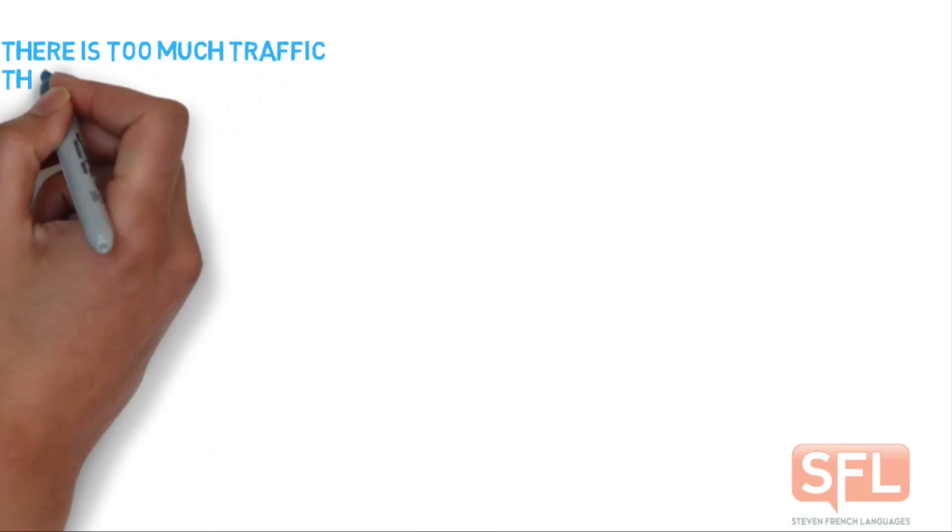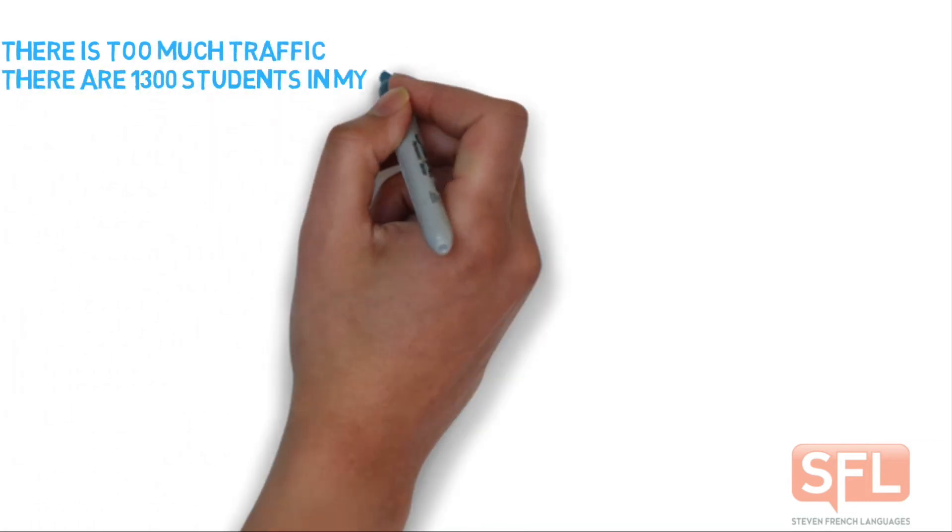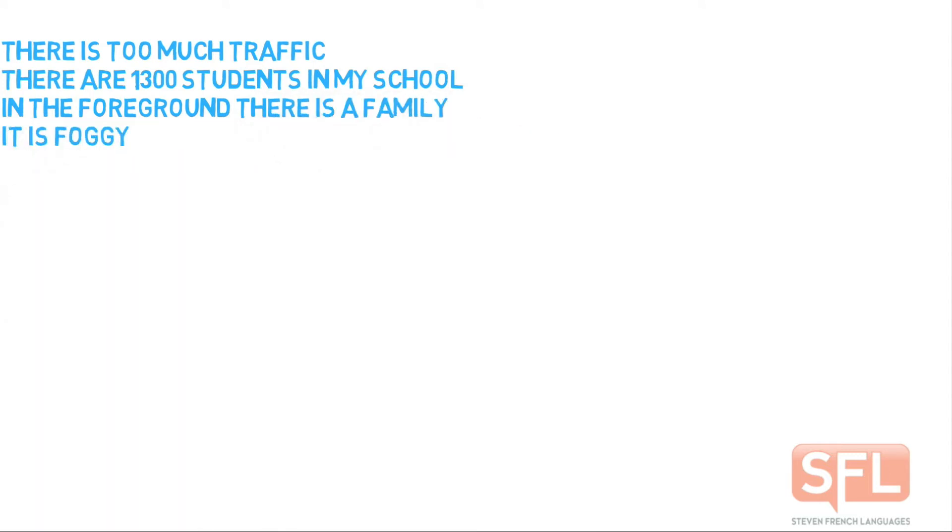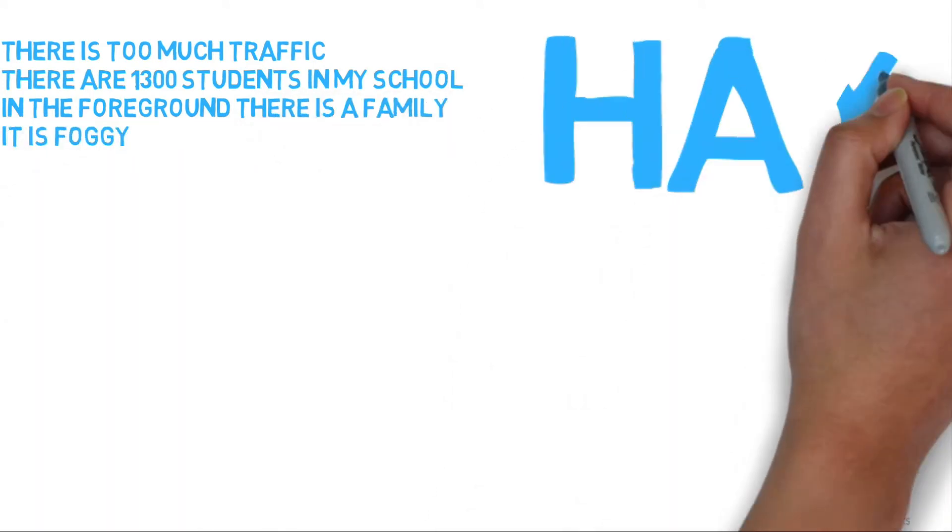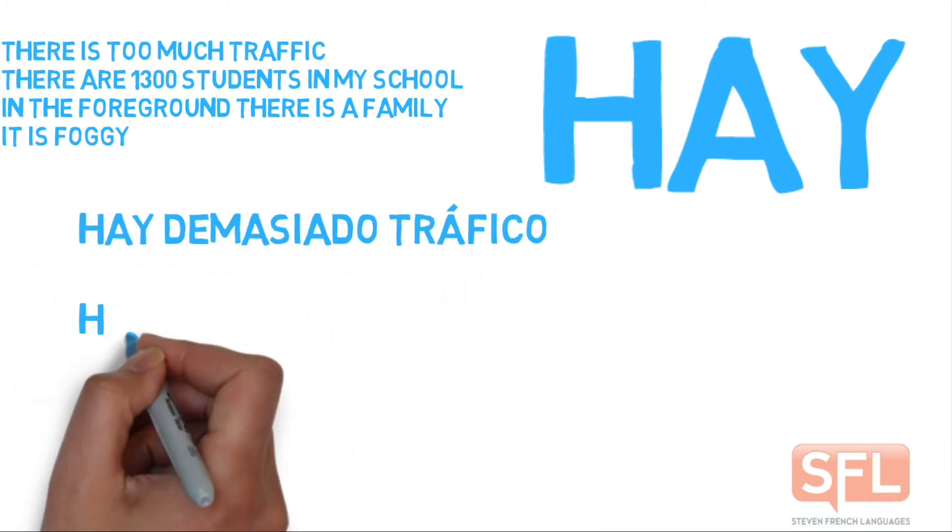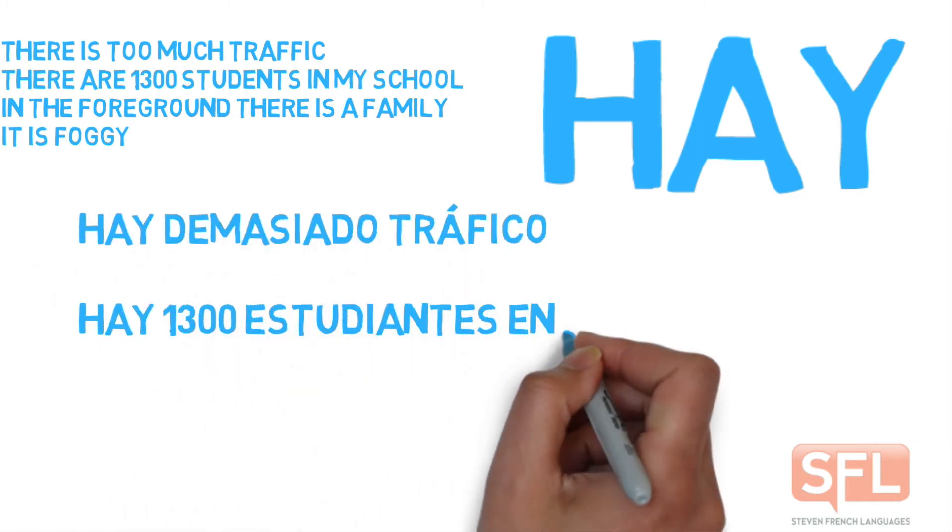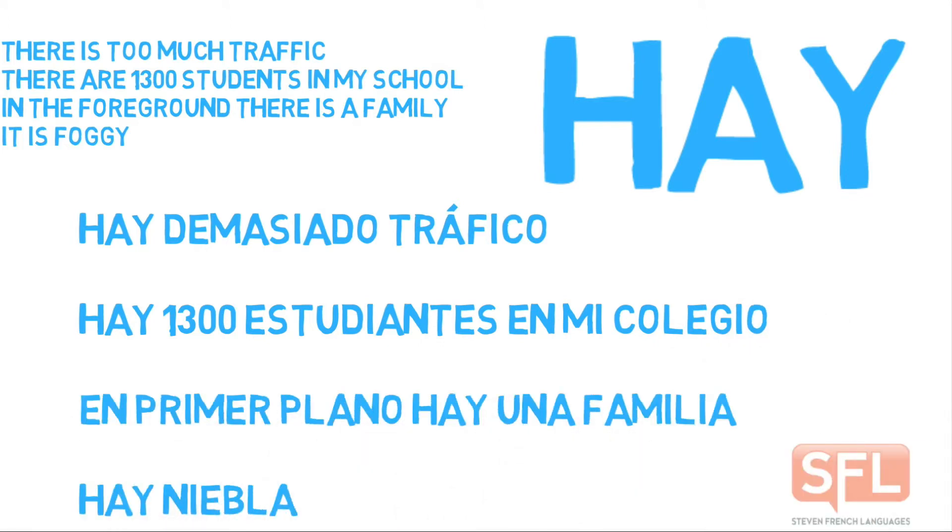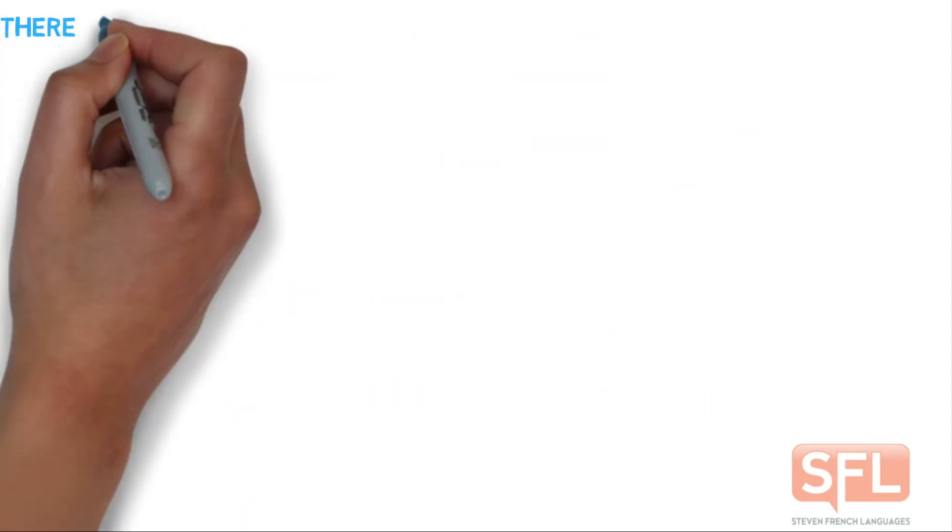So this is hay in the present tense and these are the sentences we're going to translate. You can see everything set up there and we've got the keyword hay and now we've got some translations. Notice we've got hay in the first one, hay in the second one, hay in the third one and hay in the fourth one. Hay. There is, there are.